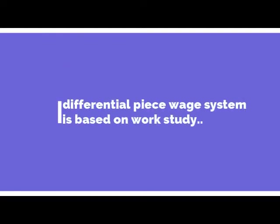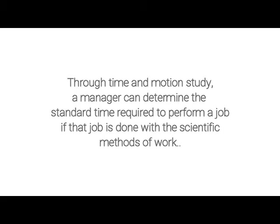As we learned previously, the work study which includes time, motion and method studies — based on that, we have the differential piece wage system. In the time study, we learned that there is a standard time determined to complete a job. With the help of time study, the standard time to produce one unit of a product can be determined, and method study determines the best method to complete that job within the stipulated time if unnecessary movements are eliminated during the work.